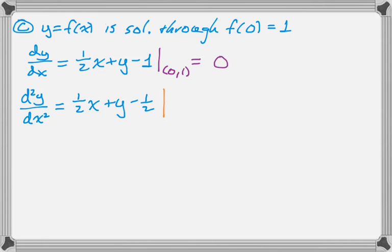So the first derivative is 0, which is one of the things we needed. And the second derivative is one half, which is greater than 0.